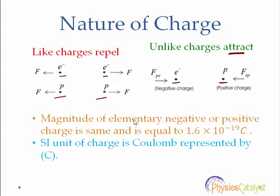The assignment of negative charge on an electron and positive charge on a proton is purely conventional and does not mean that the charge on an electron is less than that on a proton. The magnitude of the elementary positive or negative charge is the same and is equal to 1.6 × 10⁻¹⁹ coulombs. The SI unit of electric charge is the coulomb, represented by the letter C.